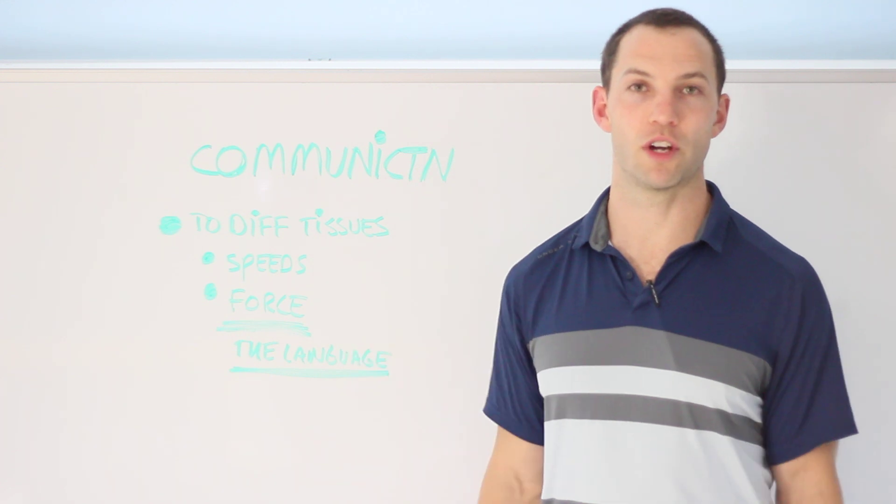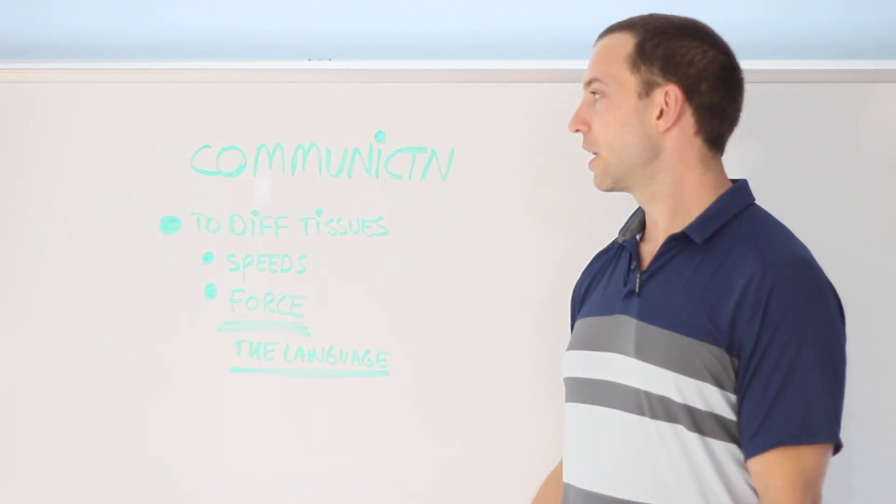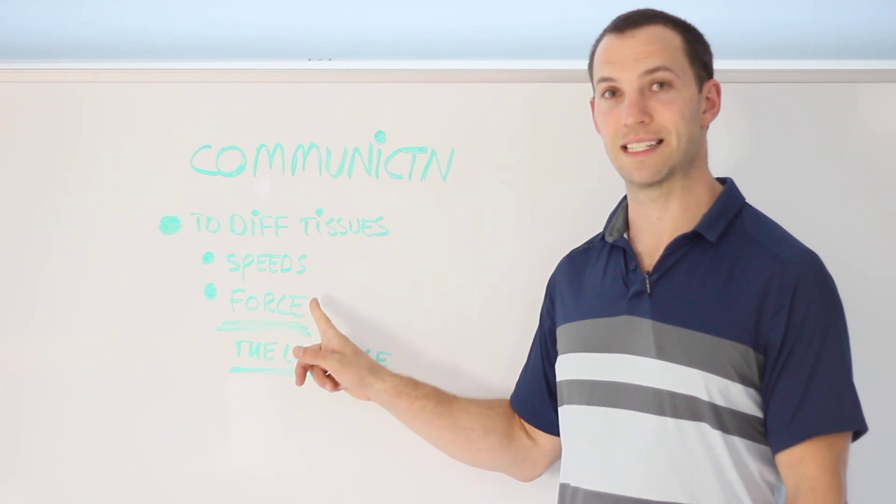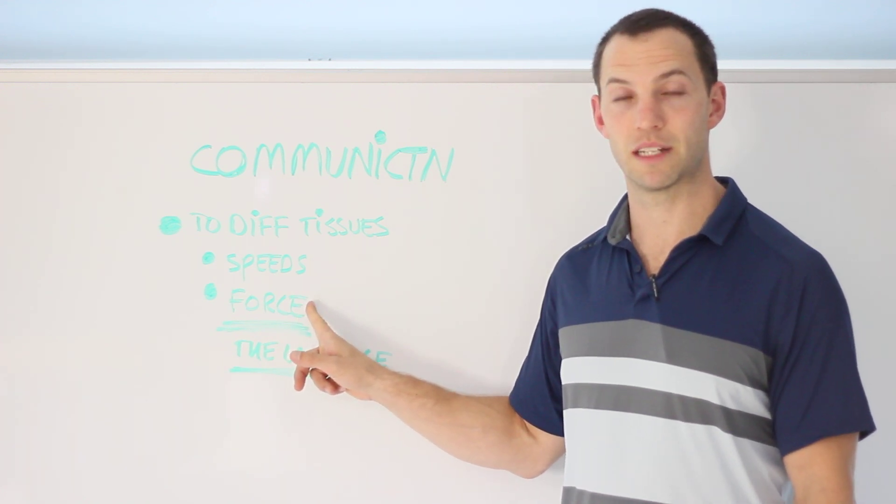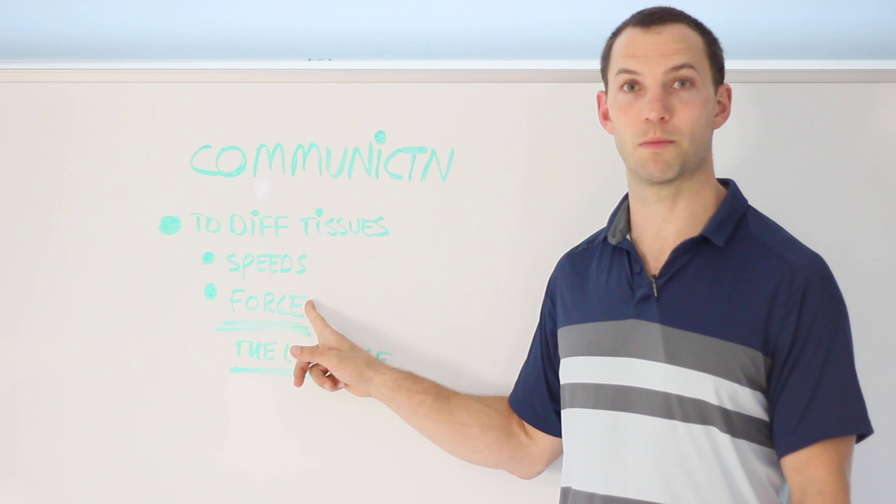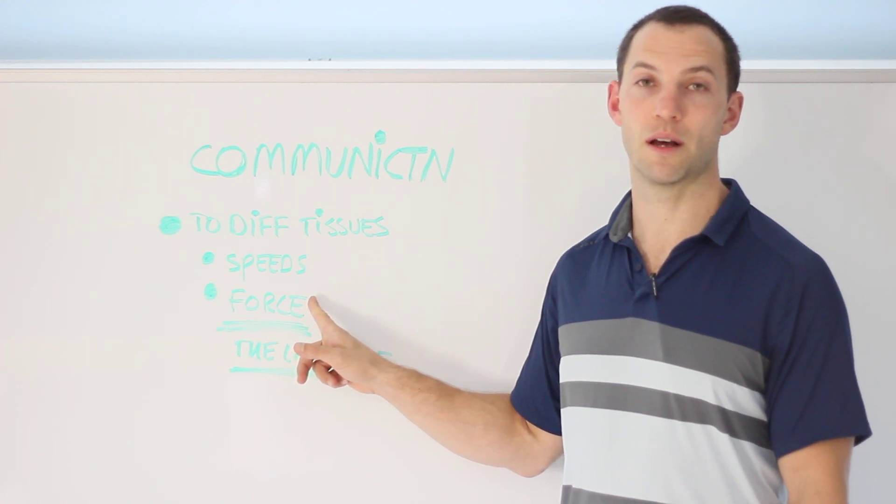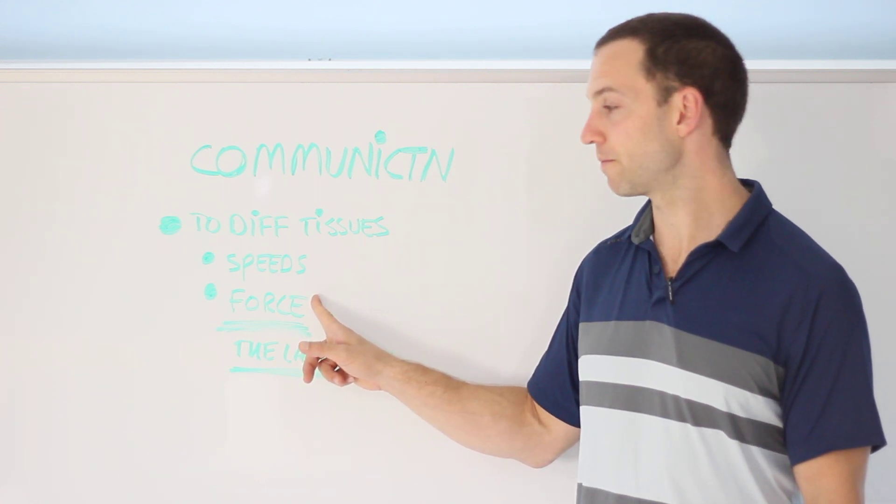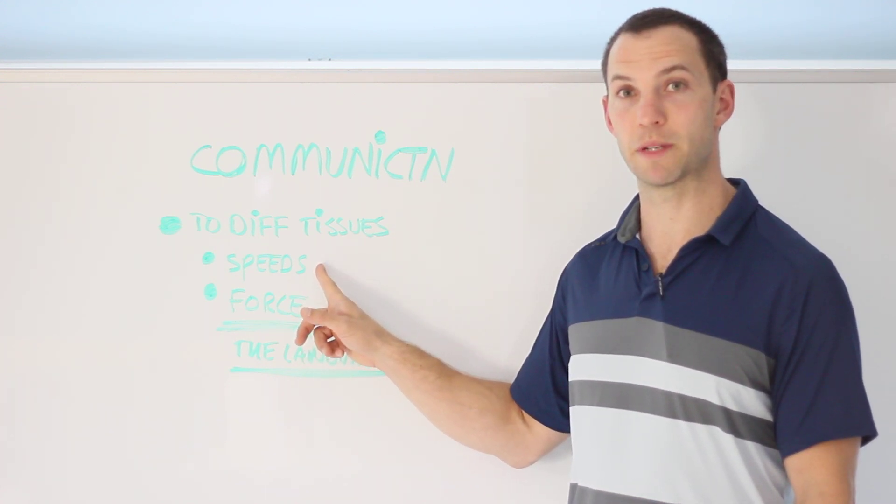But of course, you're an adult child now. So communication, different tissues, force is the language of the cell. And sometimes we'll vary the force by using a cable, a band, a dumbbell, the same posture and a different position in gravity. And then we might change those speeds.